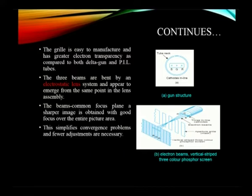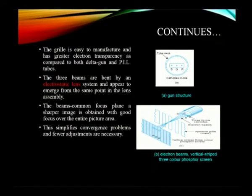When the beams have a common focus plane, a good picture is obtained over the entire picture area. The Trinitron color picture tube has higher transparency and convergence efficiency, is cost-effective due to the single gun, is more efficient, and requires lesser adjustments overall.